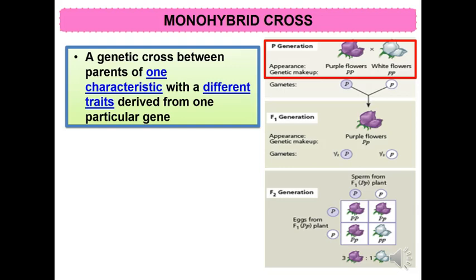A monohybrid cross is a genetic cross between parents of one characteristic with a different trait derived from one particular gene. The parental organism is a pure breed.